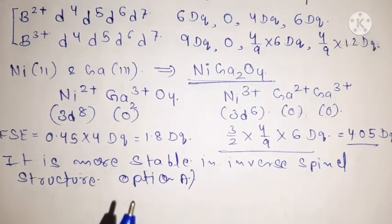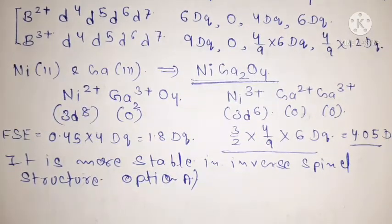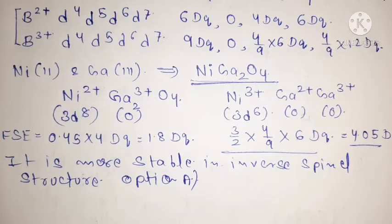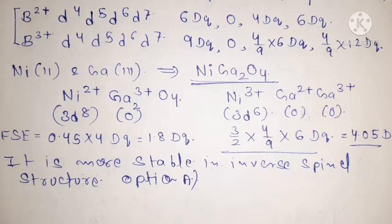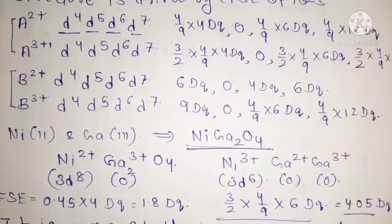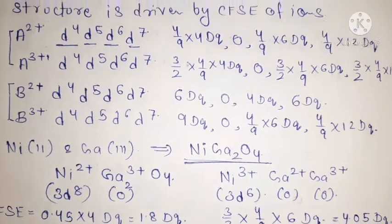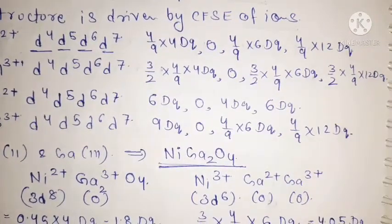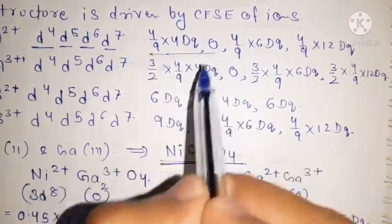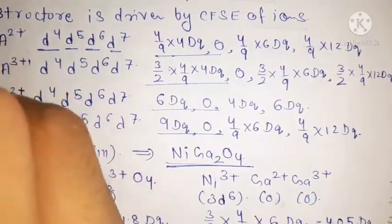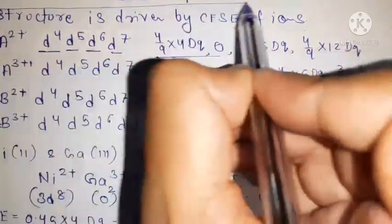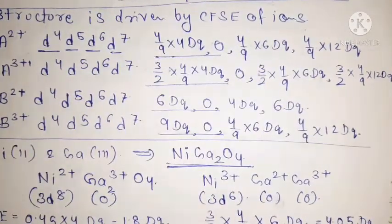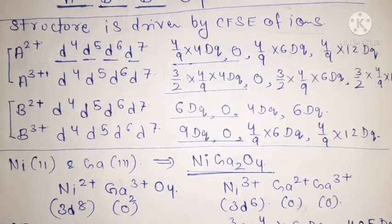This confirms that for Ni²⁺ and Ga³⁺, the inverse spinel is more stable. The rest of the ion combinations in the other options will be present in normal spinel structures. So the correct answer is option A.